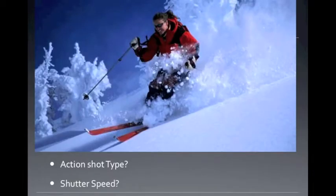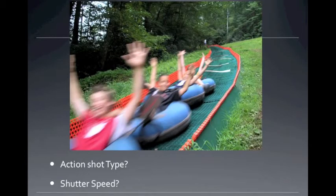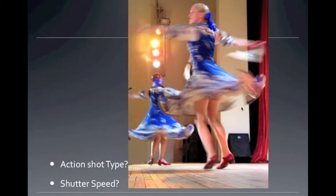What type of action shot is this? This is a stopped action shot — fast shutter speed. This one is also stopped action, fast shutter speed. The shutter was not open for very long, so they did not move very far during the shutter being open. This is a blurred action shot — shutter speed was relatively slow. Note again that the background is very clear, no blur. This one is also blurred action — slow shutter speed.